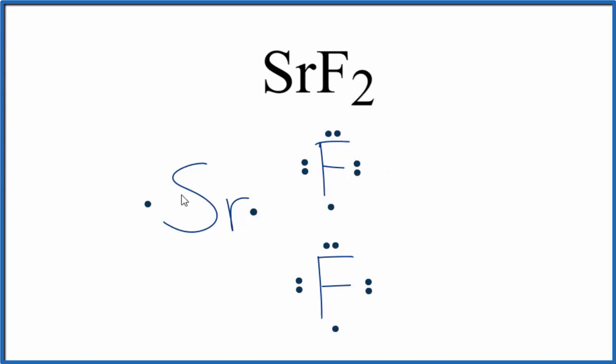The strontium, the metal here, it can lose valence electrons to the fluorine. So the strontium loses an electron here. Now the fluorine has eight valence electrons. It has an octet that's very stable. Strontium can lose another one over here. So this fluorine, now it has an octet, which is very stable.